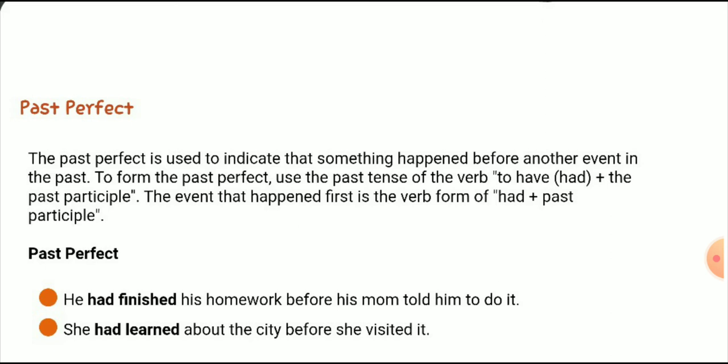'She had learned about the city before she visited it.' Here, 'she' is the subject, 'had' is taken from the formula, and 'learned' is the third form of verb — the past participle. Then comes the object. So that is how we build sentences in past perfect tense in a very simple way.